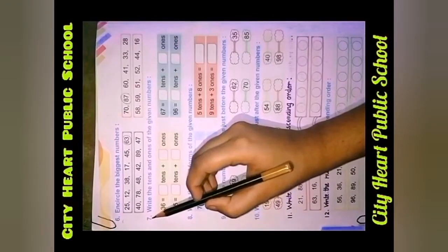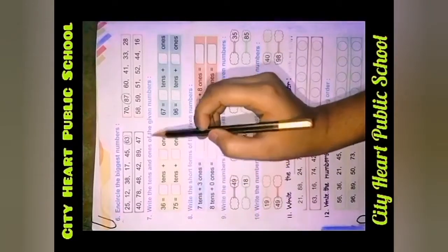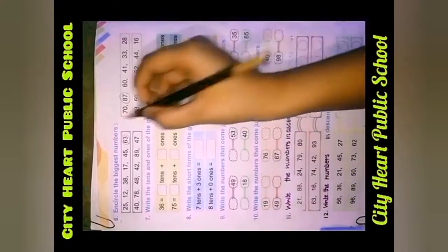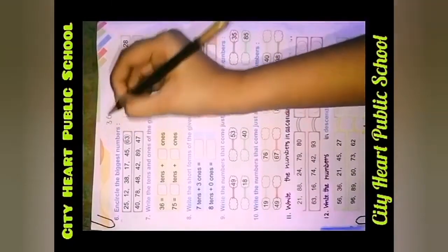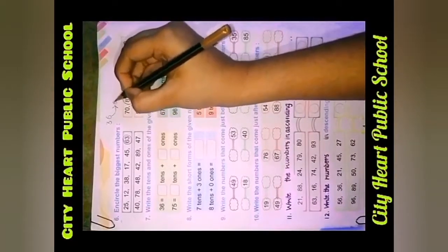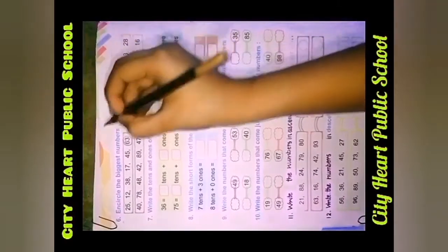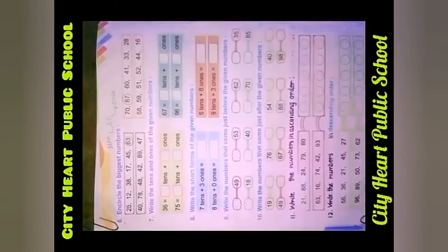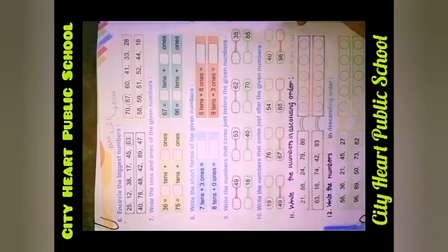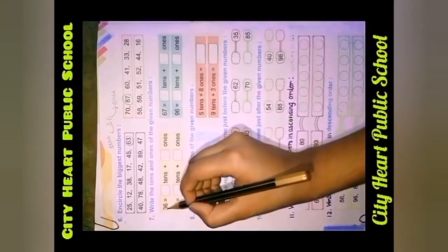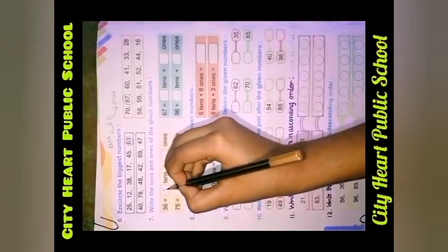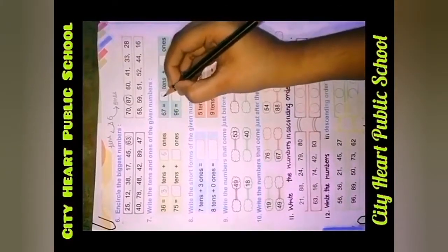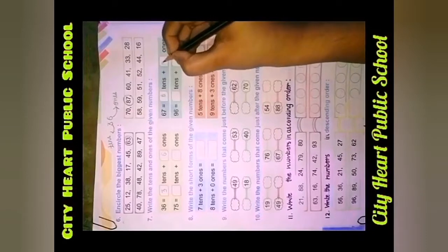Come to question number 7: Write the tens and ones of the given number. Agar tens or ones ki baat karein, jaise koi random number choose karein — like 36. Toh 6 hoga iska ones, aur 3 hoga iska tens. Toh isi tarah aapko tens or ones likhna hai. 36 hai: three tens and six ones. Sixty seven hai jaise: six tens and seven ones.